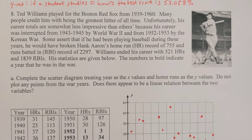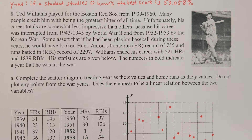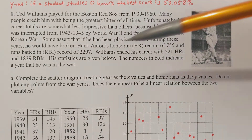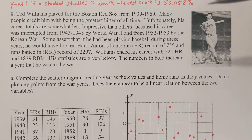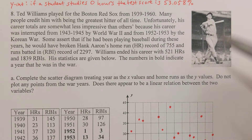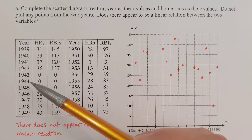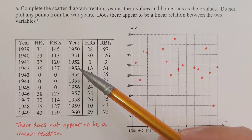Problem 8: Ted Williams played for the Boston Red Sox from 1939 to 1960. Many people believe he was the greatest hitter of all time. His career totals are somewhat less impressive because his career was interrupted twice — from 1943 to 1945 because of World War II, and again from 1952 to 1953 because of the Korean War. Some people believe that if he had been playing, he would have broken Hank Aaron's home run record of 755 and RBI record of 2,297. Williams ended his career with 521 home runs and 1,839 RBIs.